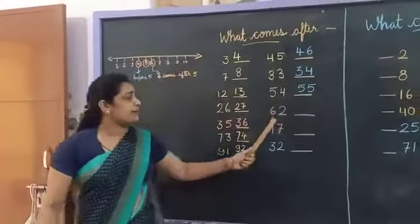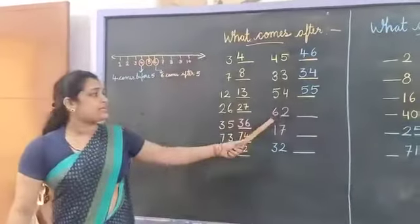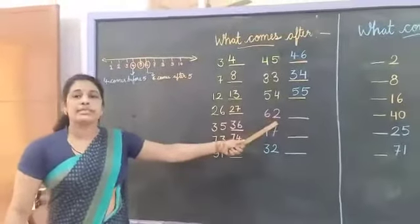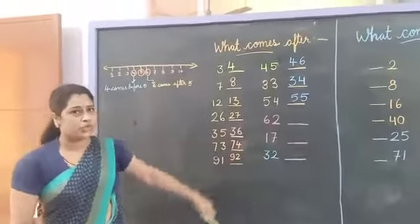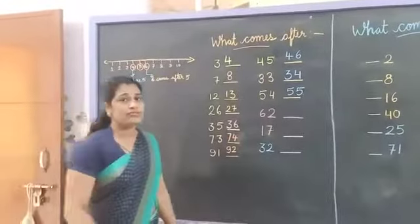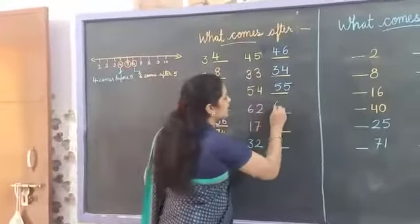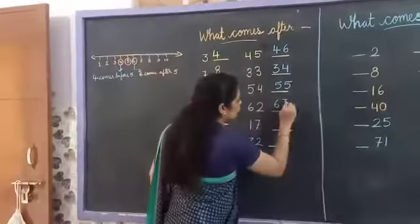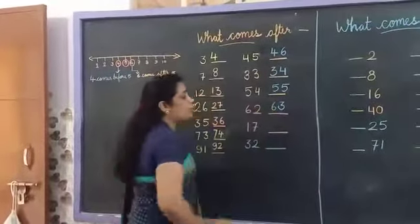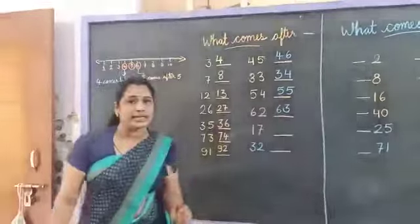And next number is 62. What comes after 62? 6, 3 — that is 63. You have to count and look carefully.